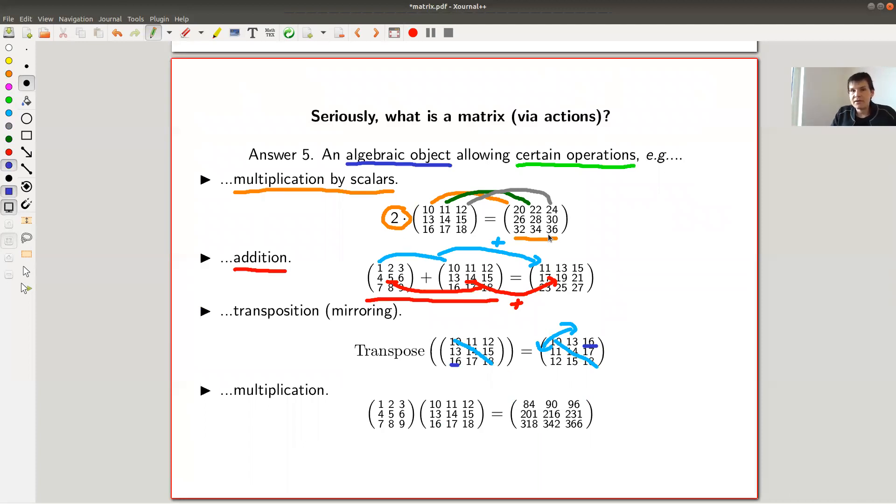The transposing kind of gets rid of the choice of what are rows and columns of your matrix. There shouldn't be a choice. Transposing it. So those three are really easy operations.